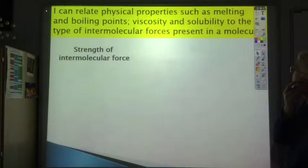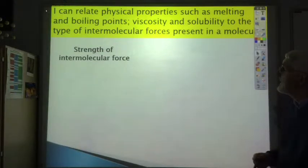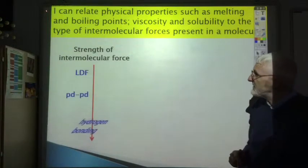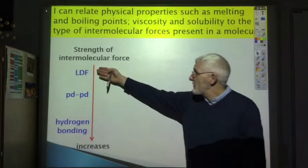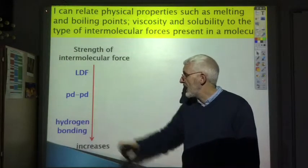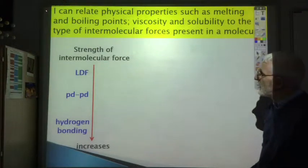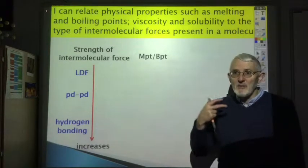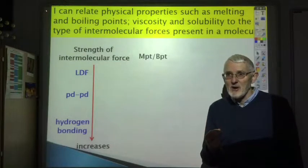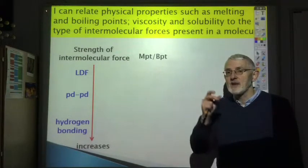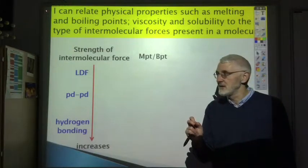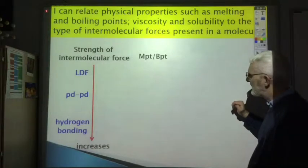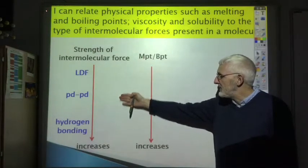I can relate physical properties such as melting and boiling points, viscosity, and solubility to the type of intermolecular forces present in the molecule. Of the three types, LDF is the weakest, then PDPD, then hydrogen bonding. When melting or boiling a molecular substance, you're not breaking the covalent bonds within the molecule — you're breaking the intermolecular forces between molecules. So as the intermolecular force increases, you need more energy, and melting and boiling points increase as you go from LDF to PDPD to hydrogen bonding.